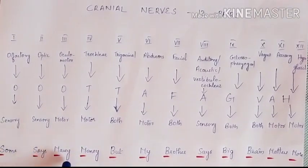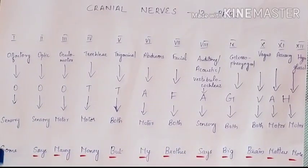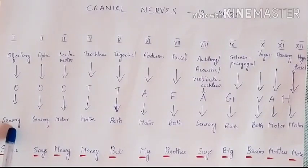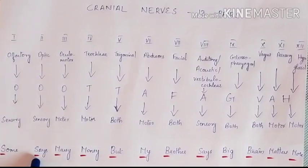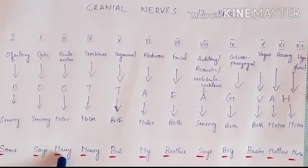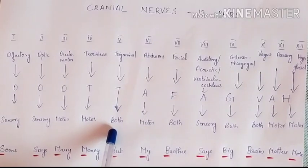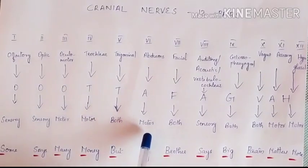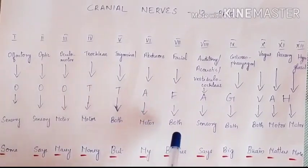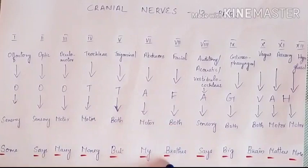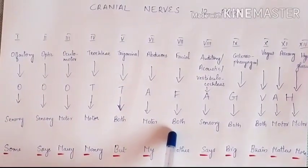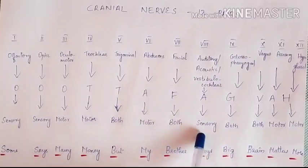Applying the mnemonic: olfactory is a sensory nerve, optic is also a sensory nerve, oculomotor is a motor nerve, trochlear is a motor nerve, trigeminal is both — sensory and motor — and abducens is a motor nerve.